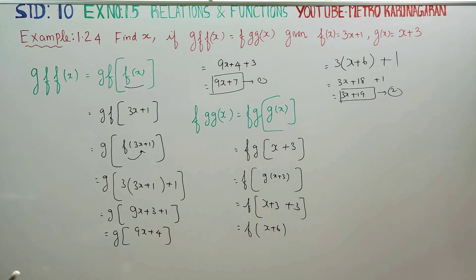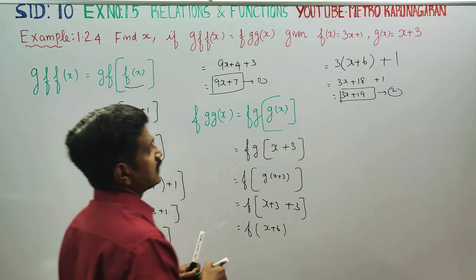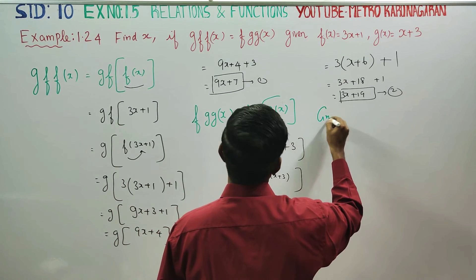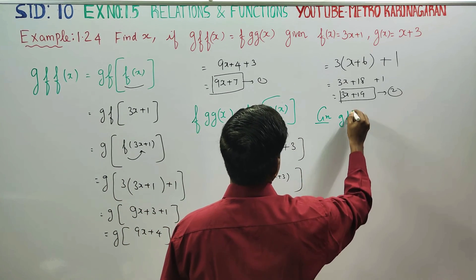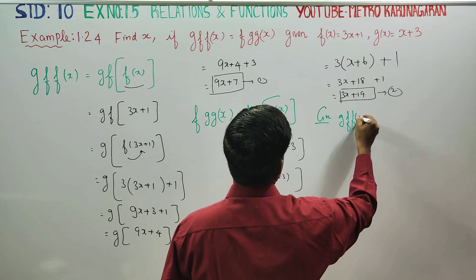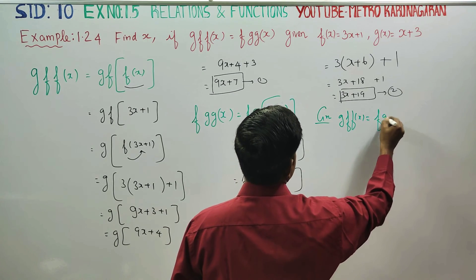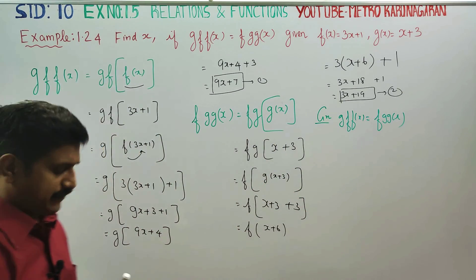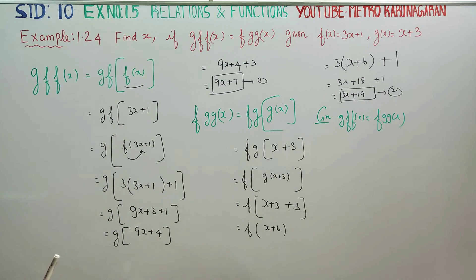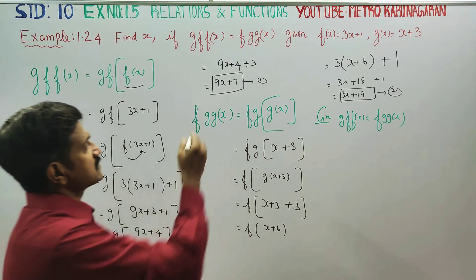It is given: g(f(x)) is equal to f(g(g(x))). The answer is equal to f(g(g(x))). Our g(f(x)) is given — the answer is correct.